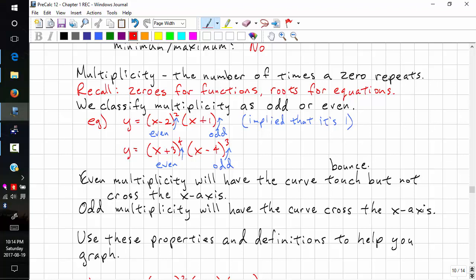Odd multiplicity will have the curve cross the x-axis. And to be more specific, one is straight through. Greater than one has a slight kink across x-axis. So, if this is your x-axis, it will look like that, there's a slight kink.